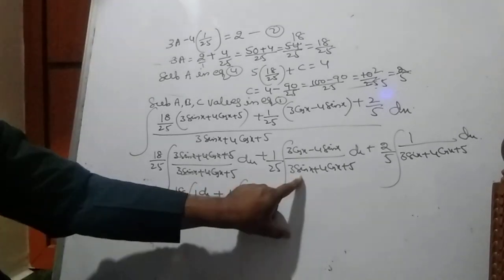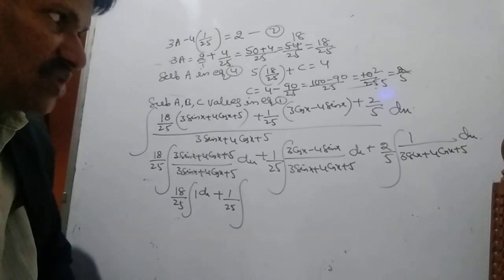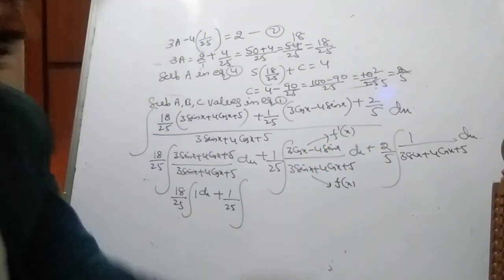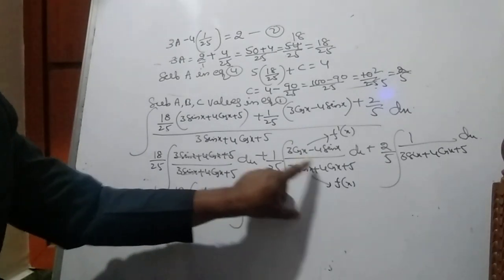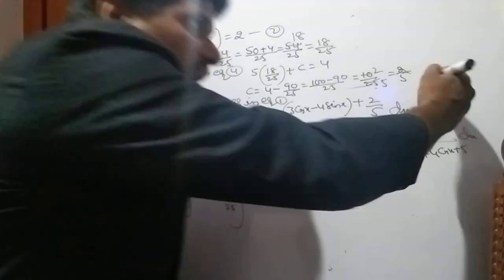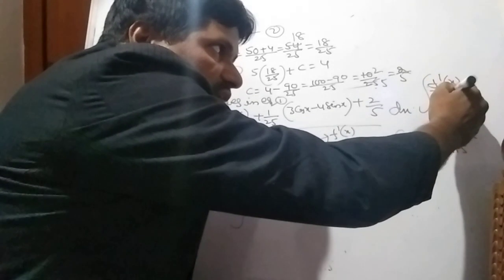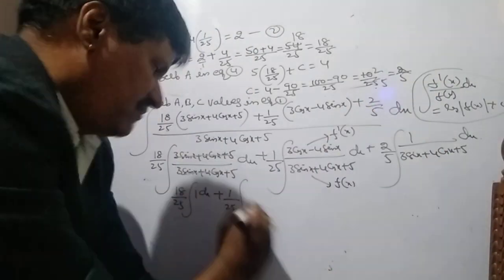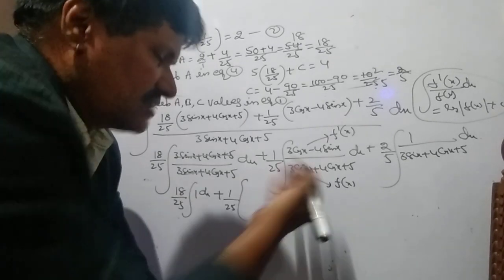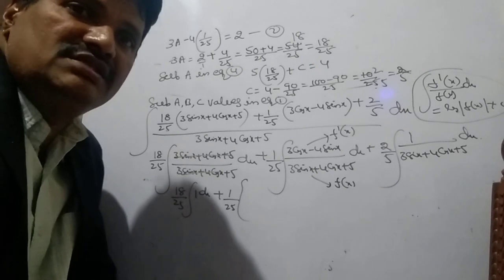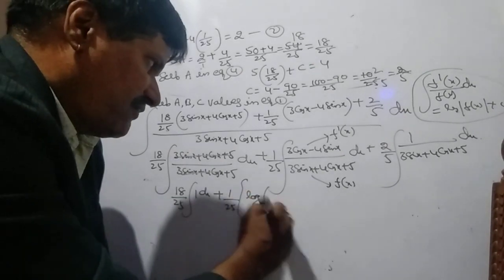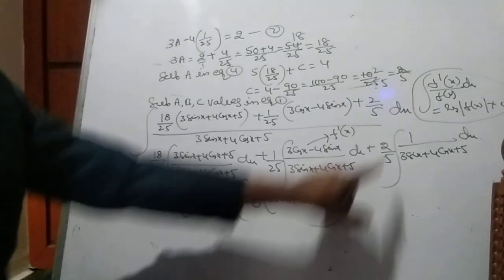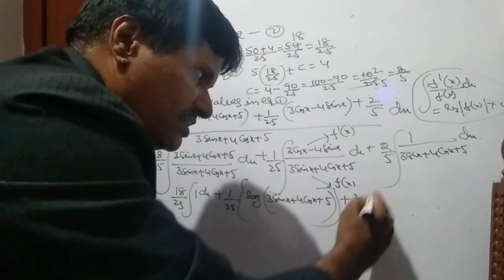The first part: (18/25) ∫1 dx = 18x/25. The second part is in the form f'(x)/f(x), whose integral is log|f(x)| + c. Here f(x) = 3 sin x + 4 cos x + 5 and f'(x) = 3 cos x − 4 sin x. So the second part gives (1/25) log|3 sin x + 4 cos x + 5|.